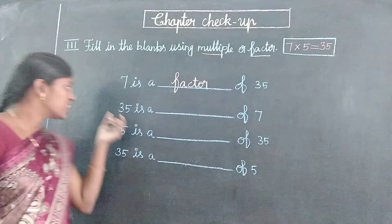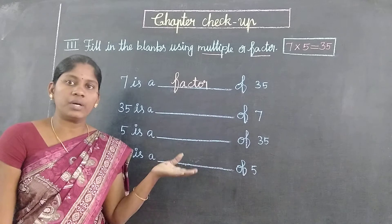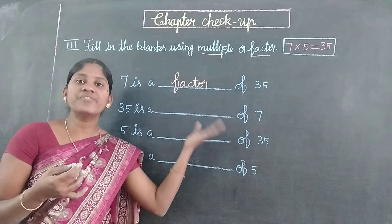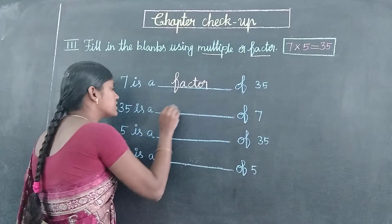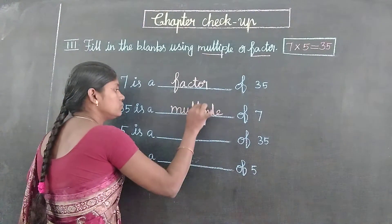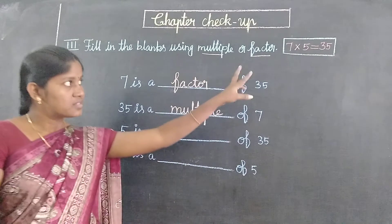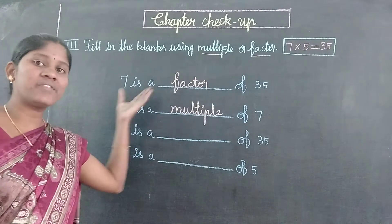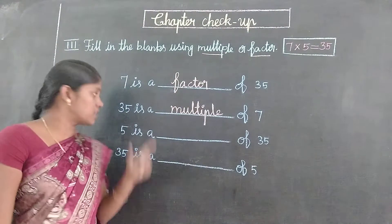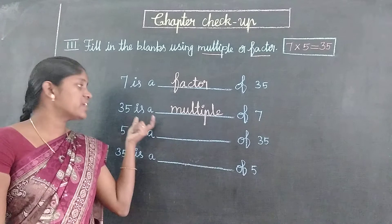And the next one: 35 is a dash of 7. 35 is a number. So, we have multiple of 7. 7 is a number of factors. 35 is a number of factors.